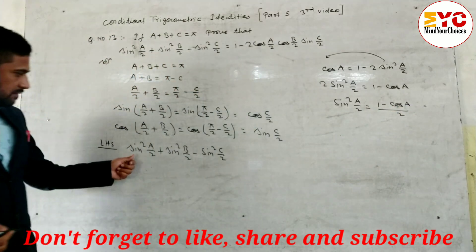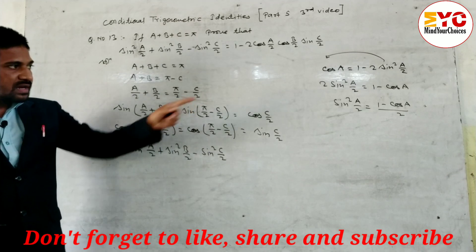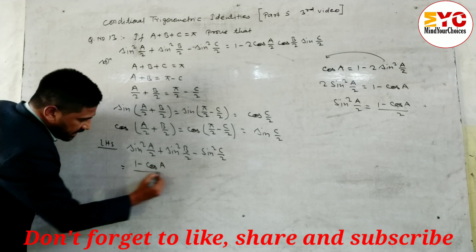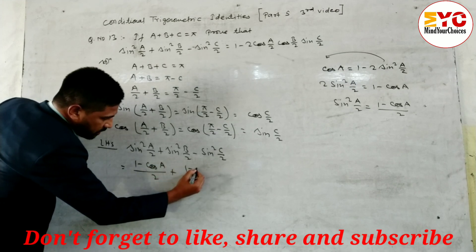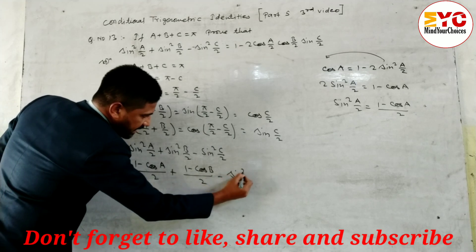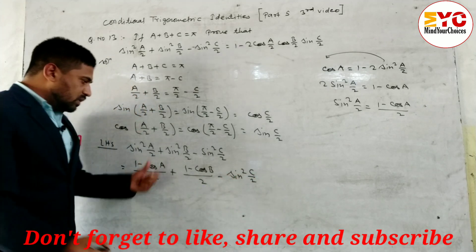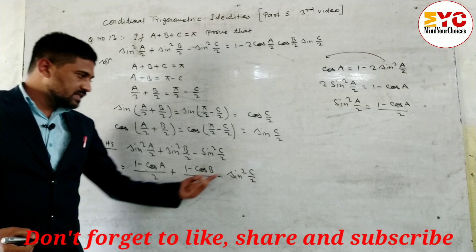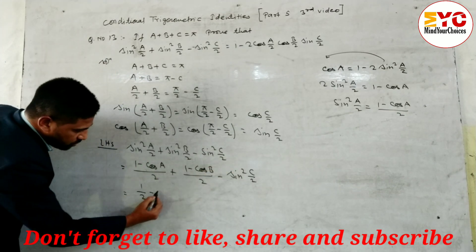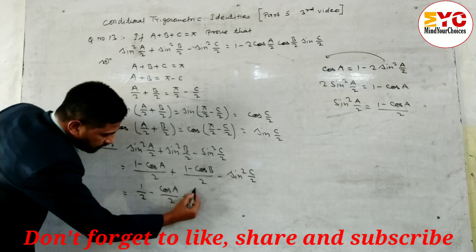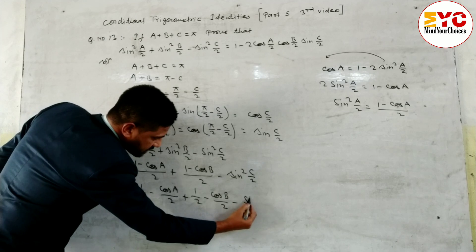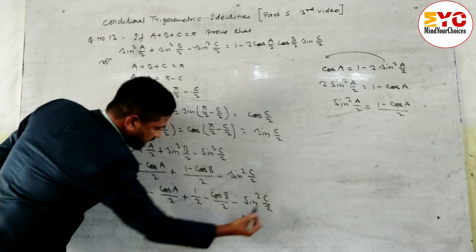So the value of sin square(a by 2) is (1 minus cos A) by 2. We substitute: (1 minus cos A) by 2 plus (1 minus cos B) by 2 minus sin square(c by 2). The first and second terms are changed using this formula; the third term remains the same. Separating: 1 by 2 minus cos A by 2 plus 1 by 2 minus cos B by 2 minus sin square(c by 2).